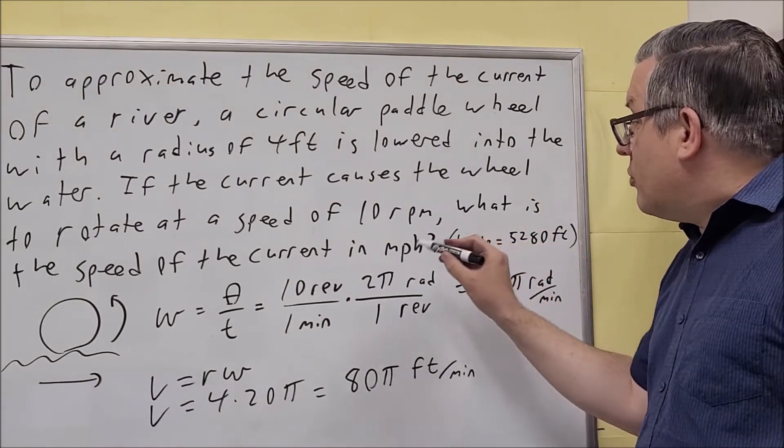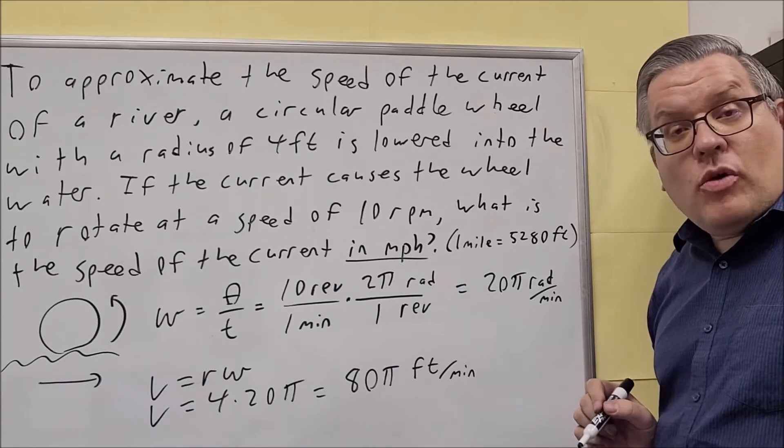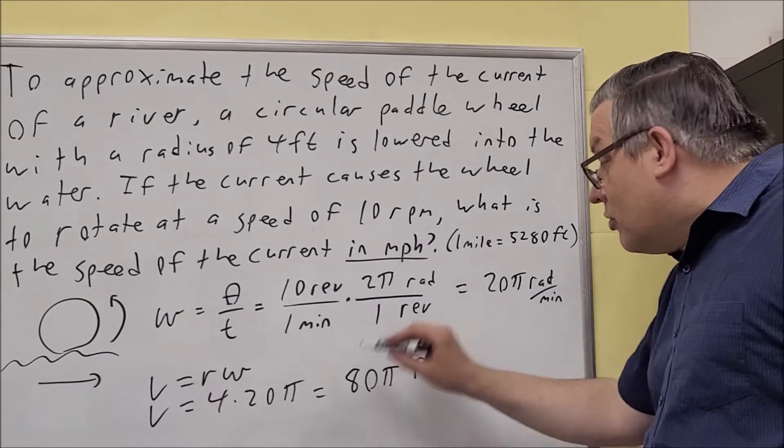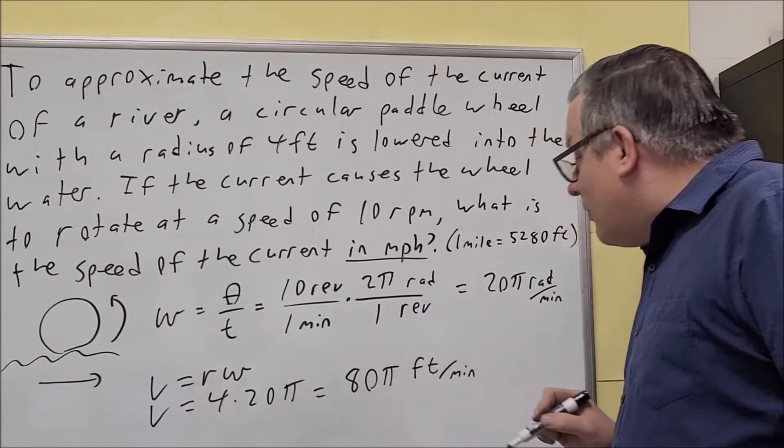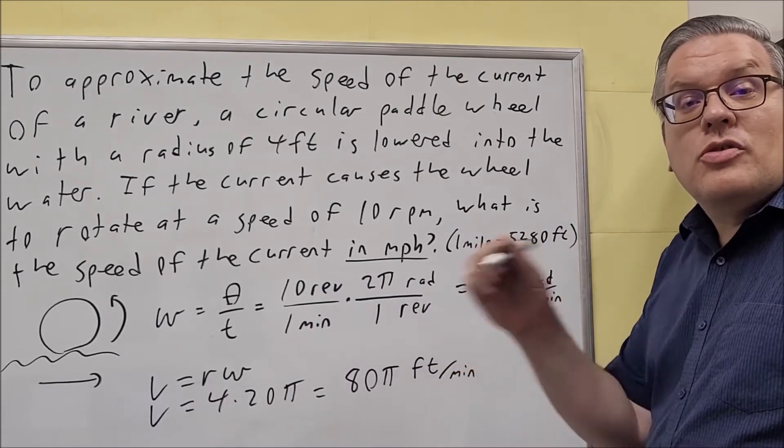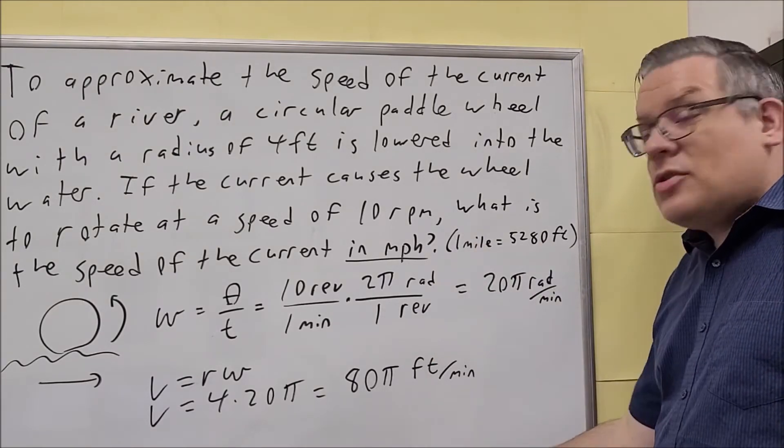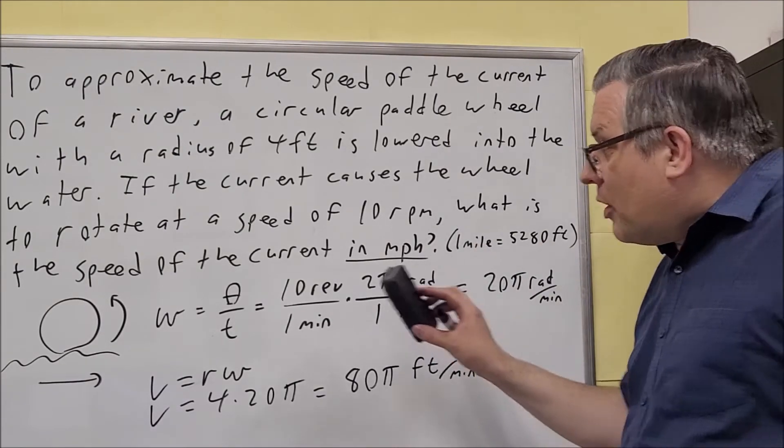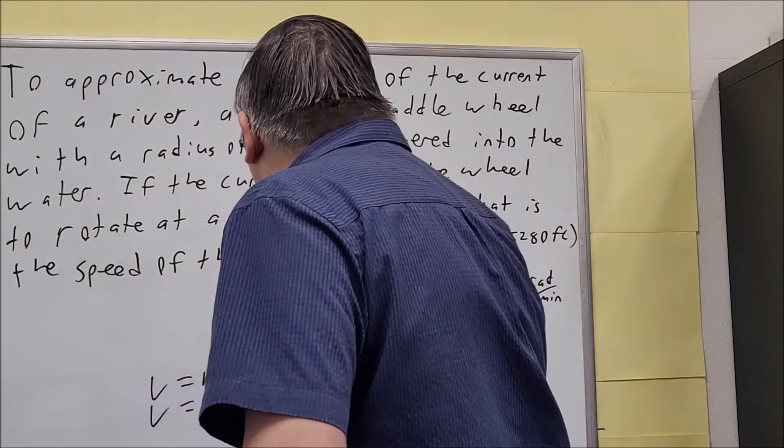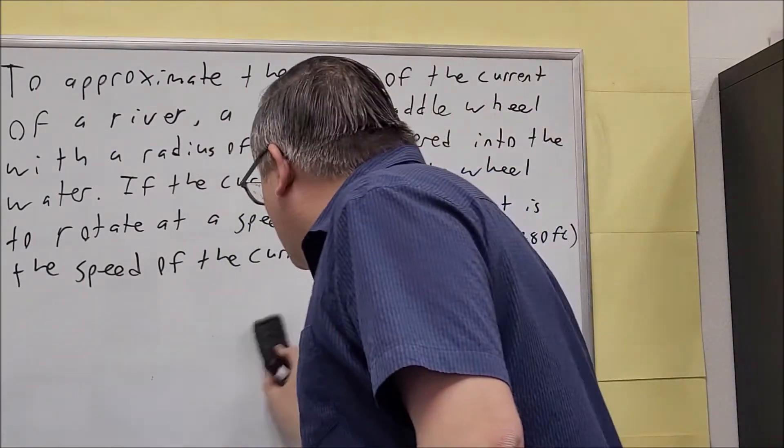It says that they want you to, what is the speed of the current in miles per hour. So now I have to do another conversion to convert 80π feet per minute into miles per hour. So we're going to use a little dimensional analysis for that. So hopefully you have time to write all this down. If not you can always pause it and rewind the video but I'm going to go ahead and start off with the 80π.